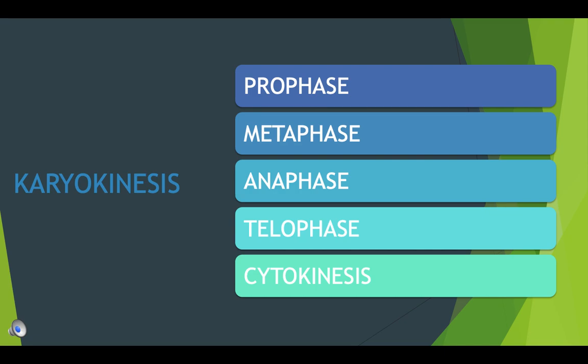All the nuclear changes that occur during cell division are collectively termed karyokinesis. Karyokinesis is followed by the division of cytoplasm, known as cytokinesis. During mitosis, the cell divides its nuclear DNA and cytoplasm to produce two new cells. The mitotic phase involves two distinct division-related processes: mitosis and cytokinesis. In mitosis, the nuclear DNA of the cell condenses into visible chromosomes and is pulled apart by the mitotic spindle, a specialized structure made out of microtubules.